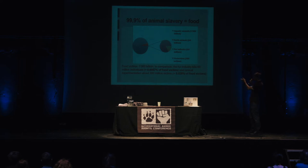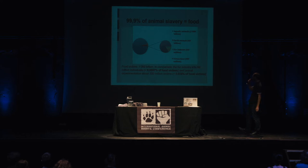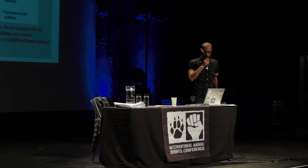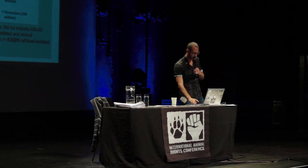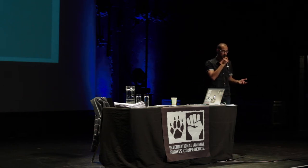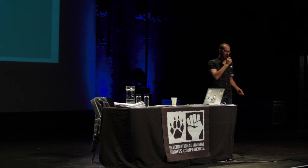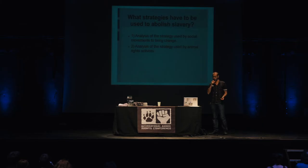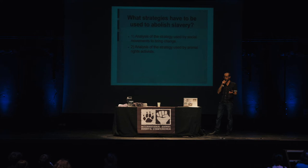The fur industry kills 60 million individuals — just 0.0057% of food victims. So if we want to create change for animals, it should be in the food industry that we act. We can ask ourselves the fundamental question: how can we abolish this animal slavery? To help us, we can use the history of social movements and analyze how they bring change in society, and then see how our animal rights movement acts to bring change for the animals.